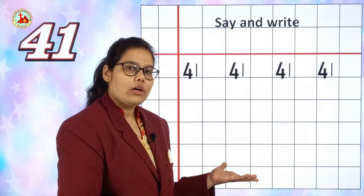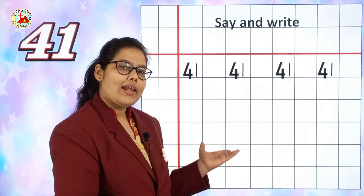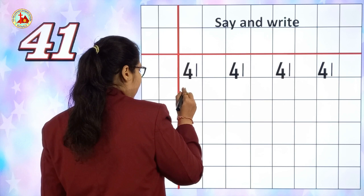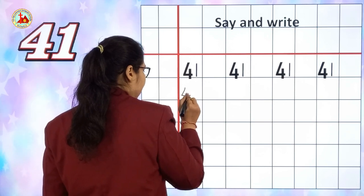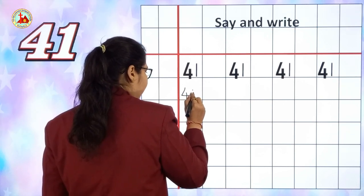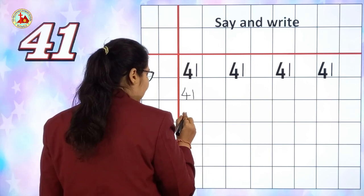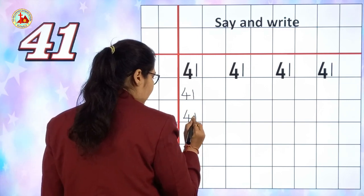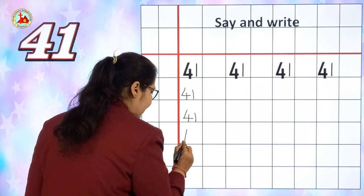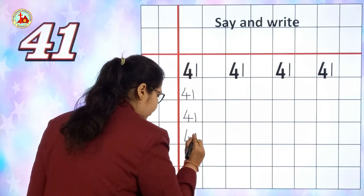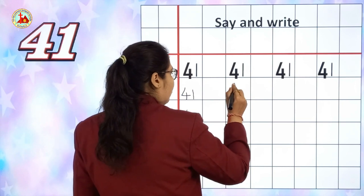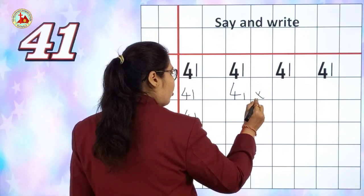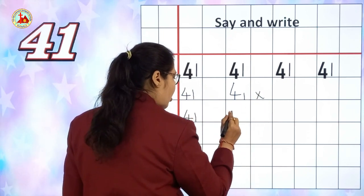Now we are going to learn how to write number 41 in a square line page. You already know, children — in a square line page you have to touch the bottom line. 41. Along with writing, you have to say the number. 41, 41. Which number are we writing? 41. If you write one number big and another number small, then I will put wrong. Both numbers should be of equal size.